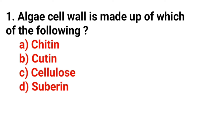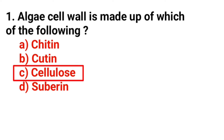Question 1: The cell wall is made up of which of the following? The answer is option C: cellulose.